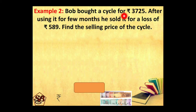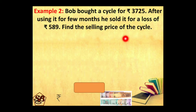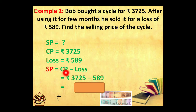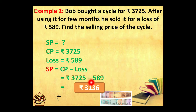Bob bought a cycle for Rs. 3,725. After using it for a few months he sold it for a loss of Rs. 589. Find the selling price of the cycle. Now cost price of cycle is Rs. 3,725 and there is a loss of Rs. 589. So selling price will be cost price minus loss: 3,725 minus Rs. 589. Subtracting we get the answer as Rs. 3,136. So our selling price is Rs. 3,136.